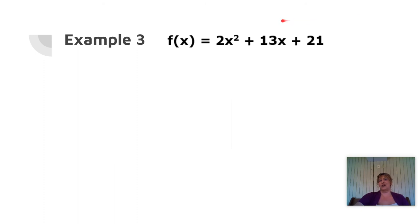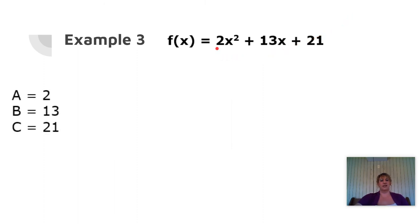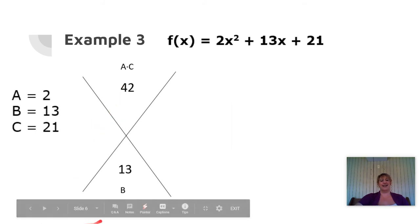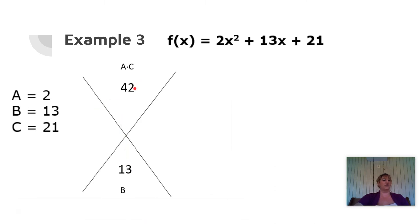Now we're going to talk about functions where a doesn't equal 1. We have a value of 2, using the function f of x equals 2x squared plus 13x plus 21. We start by factoring — a equals 2, b equals 13, c equals 21. A times c goes on top: 2 times 21 is 42. B goes in the bottom: 13. We're looking for two numbers that multiply to 42 and add to 13. If I take 6 times 7, that's 42, and 6 plus 7 is 13. So I've got 7 and 6 as my side pieces. But since I have an a value, I have to divide each side by that a value — divide both by 2.